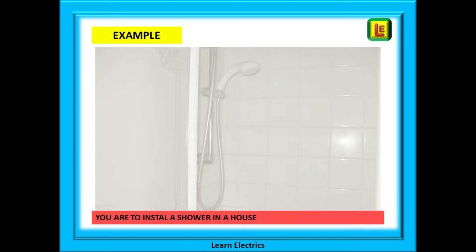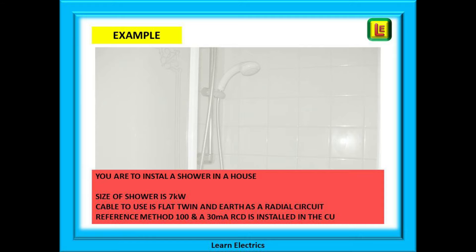Let us now work through an example in steps as you would do in practice. We have been asked to install a shower in a house. We know the size of shower is 7 kilowatts or 7000 watts. The cable is flat twin and earth, being installed as a radial circuit, and we will be laying cable above the ceiling where it will be in contact with 100 millimetres of loft insulation. There is also a 30 milliamp RCD already installed in the consumer unit.